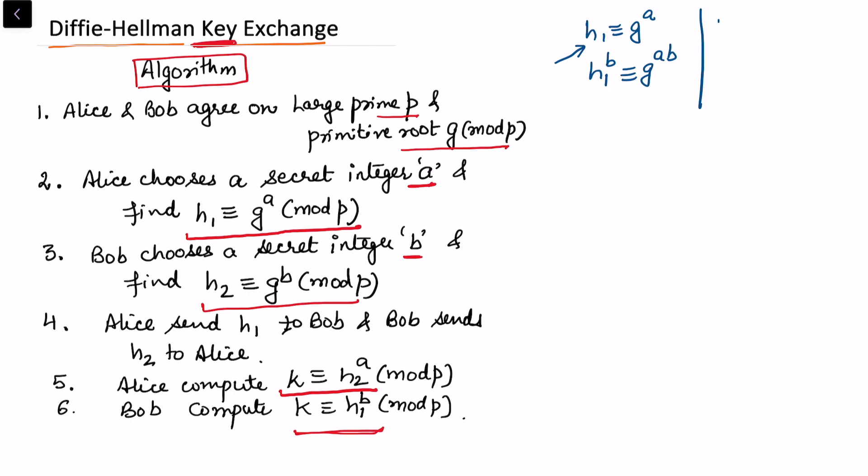Separately, h2 was the calculation done by Bob, so this is g to the power b. Raised on both sides by a, this is h2 raised to power a, congruent to g to the power ab.